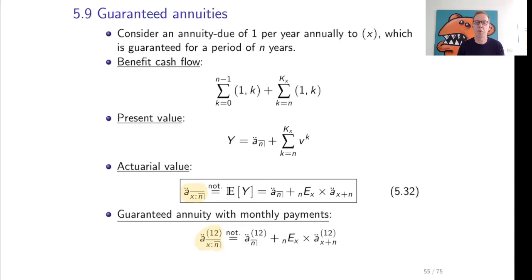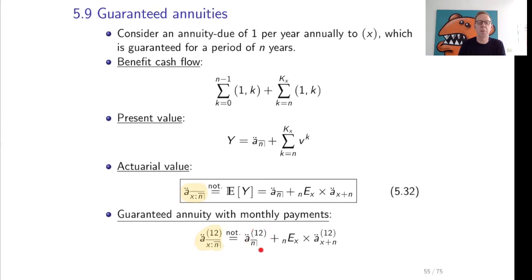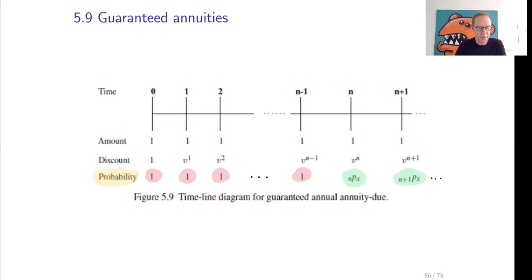The overlining of x and n means that the payment is made until the last of the two entities disappears. So it is for sure n years, and if x survives n years, then it continues until x dies. That's the meaning of the line over x and n — it's a payment until the last of the two disappears. We can also have a look at the guaranteed annuity with monthly payments, which is very similar. That's an a double-dot x n overlined with superscript (12): an annuity with monthly payments of 1/12 for a period of n years, plus a deferred monthly annuity starting at age x plus n.